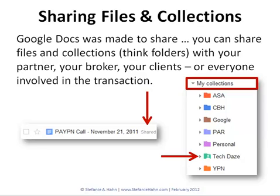The second thing is sharing files and collections. Google Docs was made to share. You can share files and collections — remember, collections are just folders — with your partner, your broker, your clients, really everyone involved in the transaction. The first one on the left, where it says PAYPN call, that's just one single file that was shared. You can tell it's shared because it will always say 'shared' after the specific file. Over on collections, all those collections that are color coded — if you look at the one that says tech days, there's a little silhouetted head in there because that particular collection is shared. And then if I went into that collection, each document would say 'shared' after it.